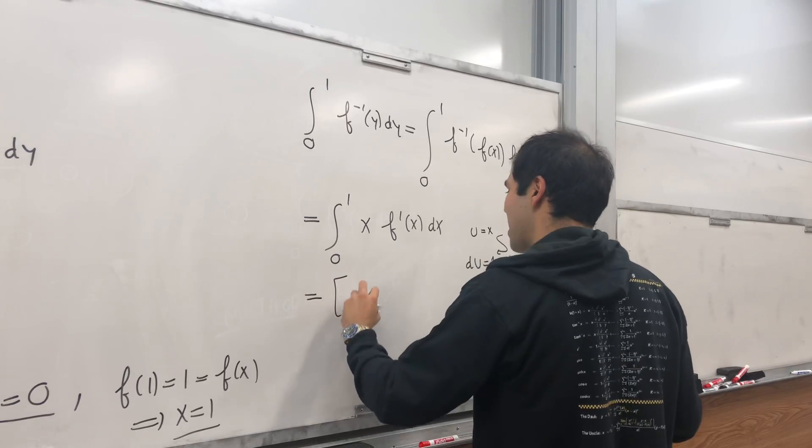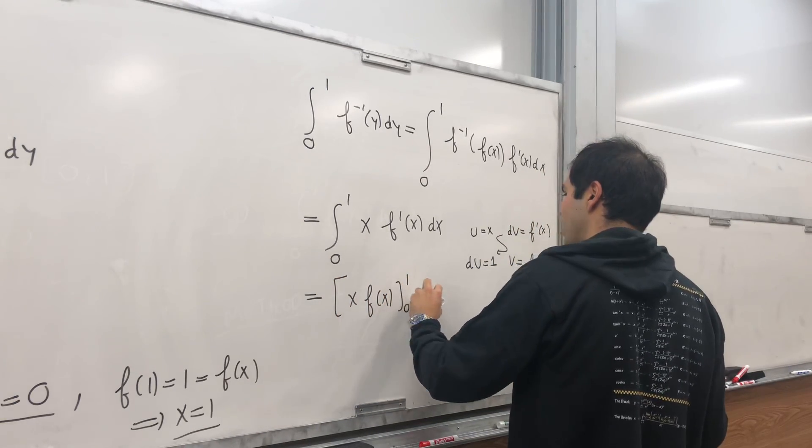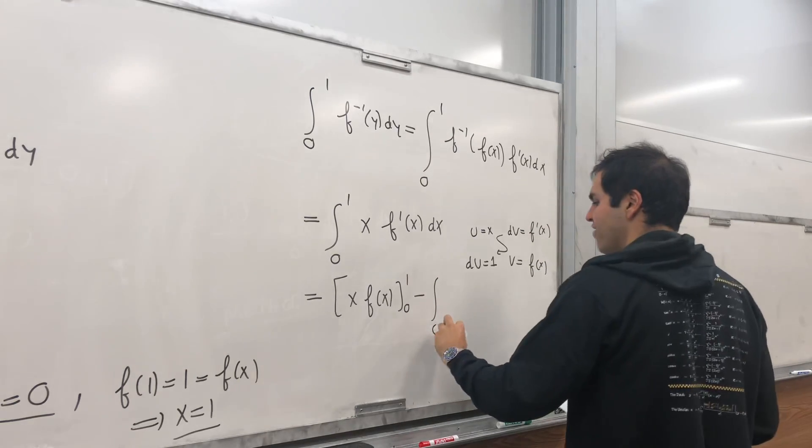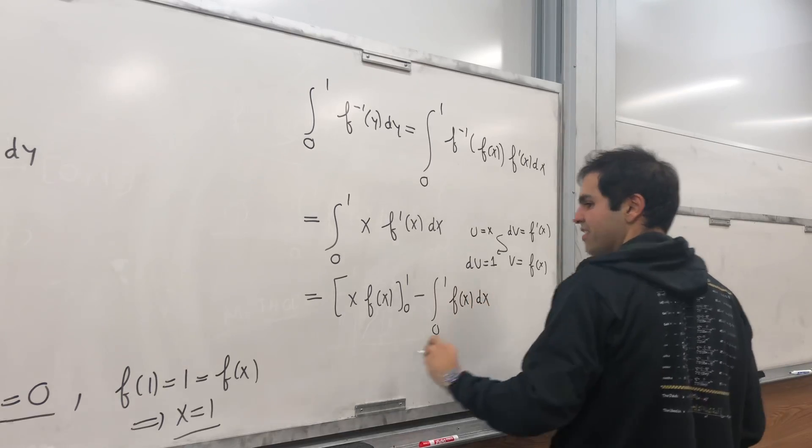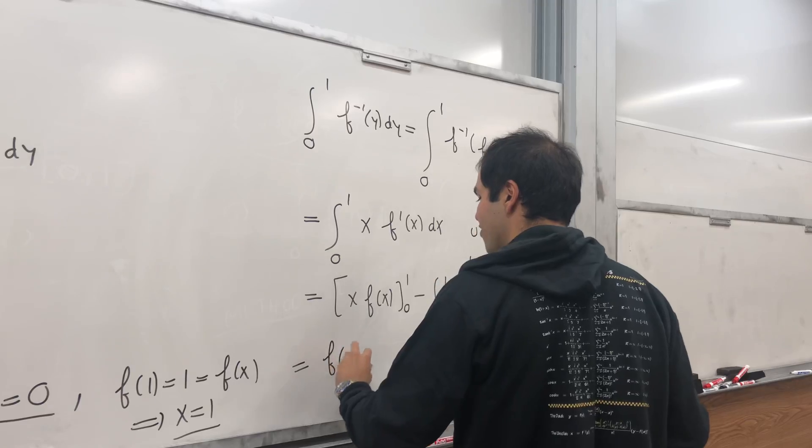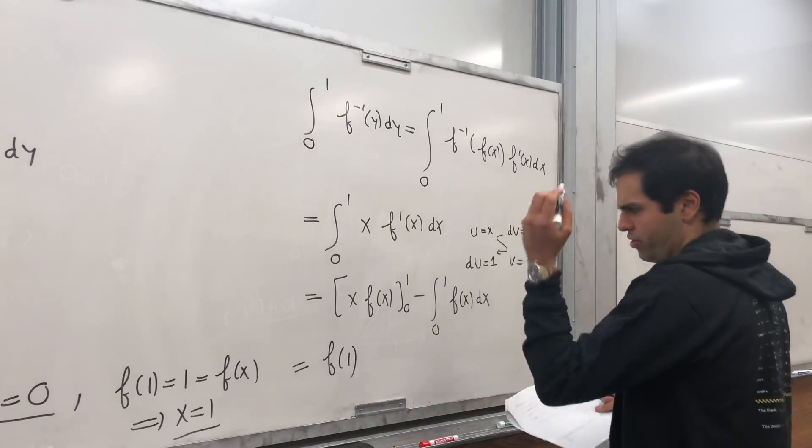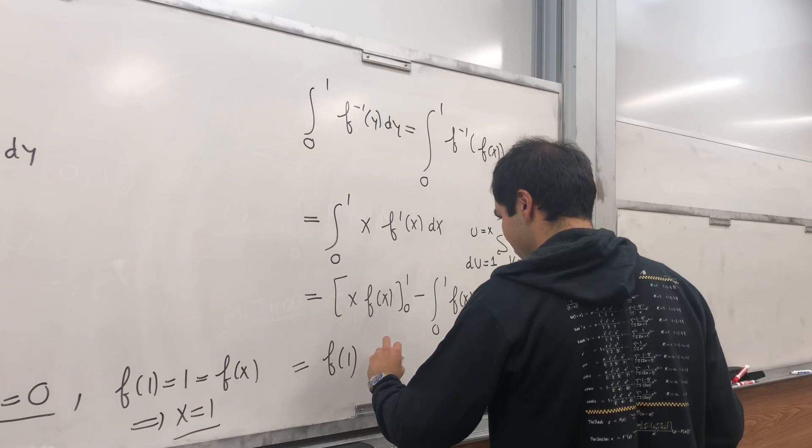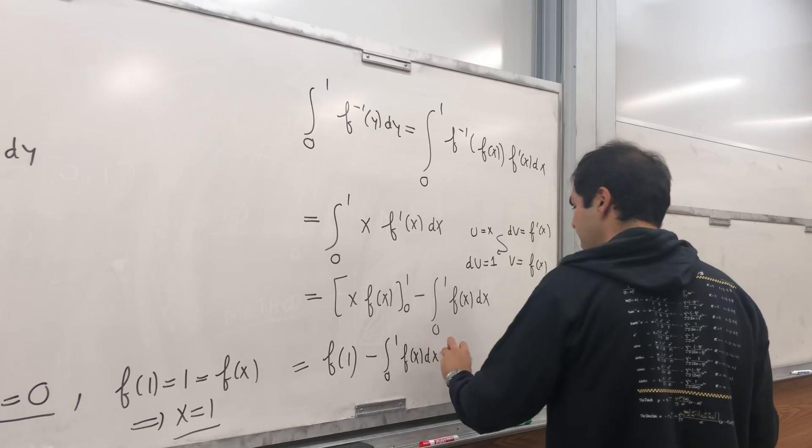And we get x f(x) from 0 to 1, minus integral of 1 times f(x). So from 0 to 1 of f(x)dx. And that becomes 1·f(1), which is f(1), minus 0·f(0), which is just 0, minus integral from 0 to 1 of f(x)dx.